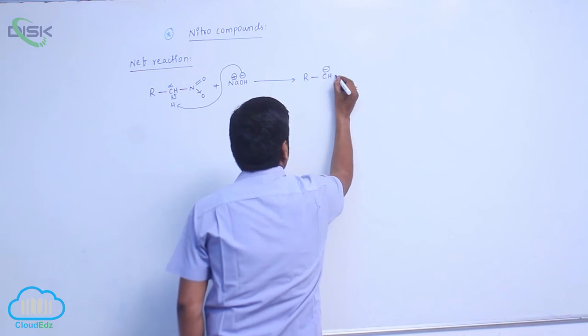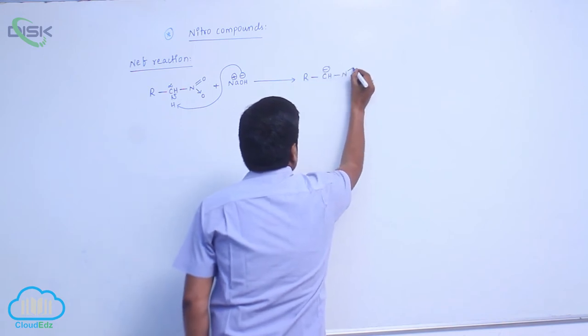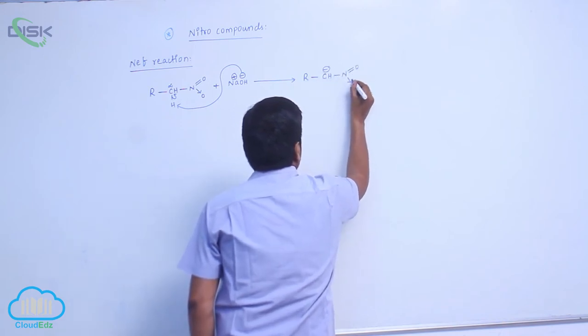This forms RCH- N=O with a negative oxygen.